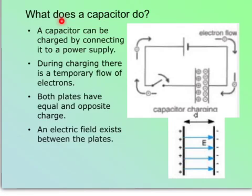What does a capacitor do? A capacitor can be charged by connecting it to a power supply. Here is the power supply. Here is the capacitor. During charging, there is a temporary flow of electrons.